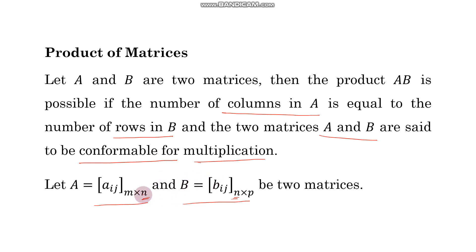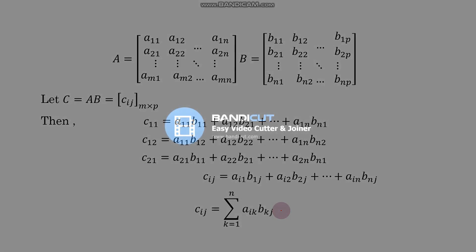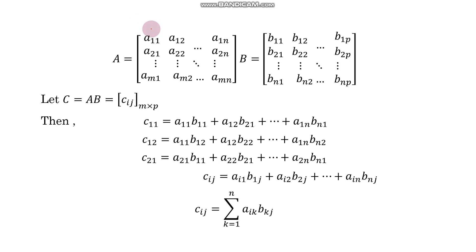After multiplication, we get a new matrix C. The order of this result matrix C, denoted Cij, will be M by P. So A of order M by N multiplied by B of order N by P gives C of order M by P.